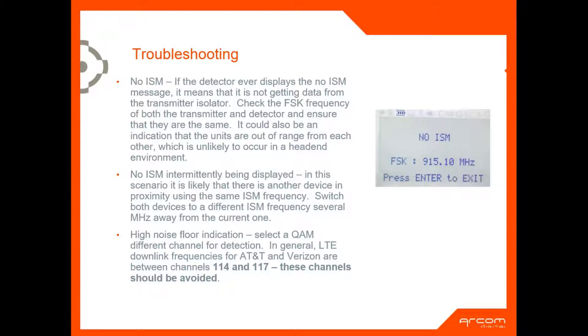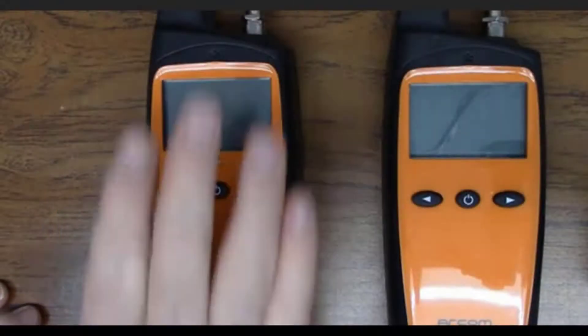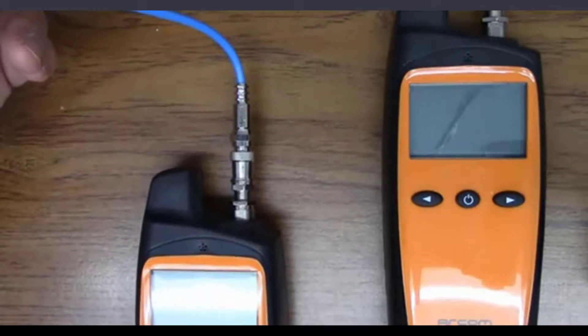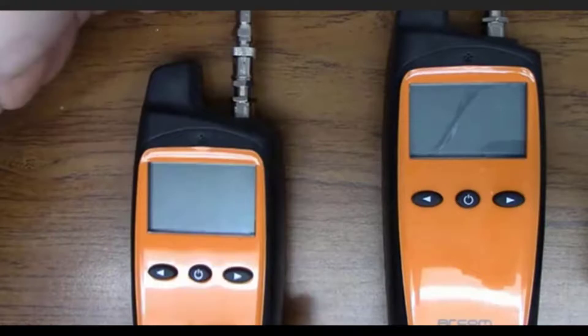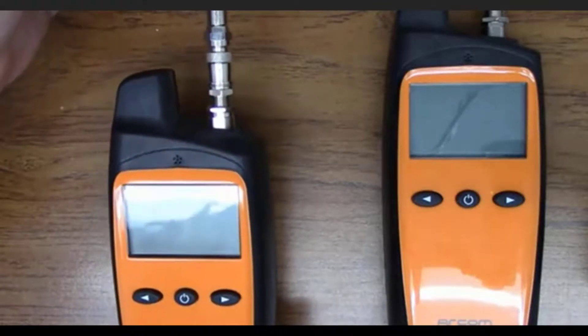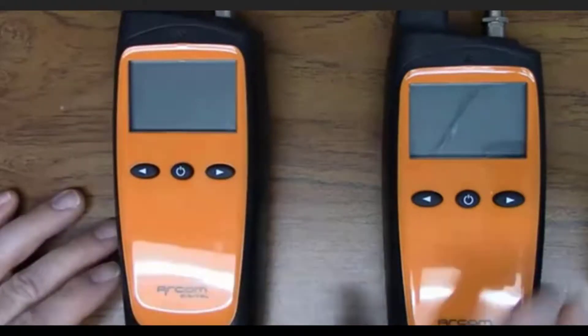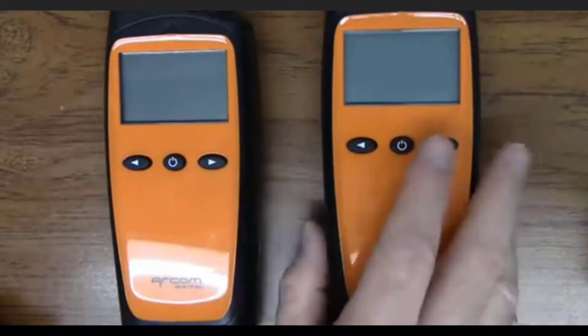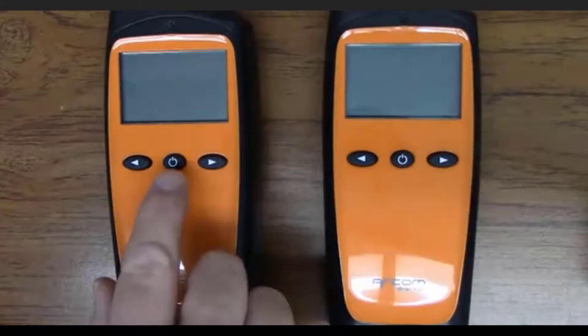Now for the live demonstration. Here I've got my transmitter and a cable coming in from a system test point, and my signal level is roughly 5 dBmV. Here I've got a receiver with a loop antenna — it's about a 700 megahertz antenna. I do not have the filter in there, so you'll see that the noise floor on this will be a little bit higher.